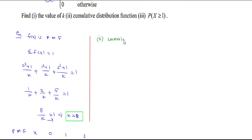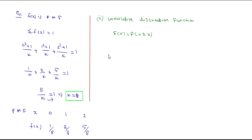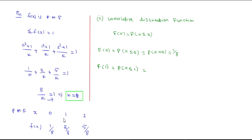Part 2: Cumulative distribution function. The cumulative distribution function formula is F(x) = P(X ≤ x). For x = 0, 1, 2: F(0) = P(X ≤ 0) = P(X = 0) = 1/8. F(1) = P(X ≤ 1) = P(X = 0) + P(X = 1).